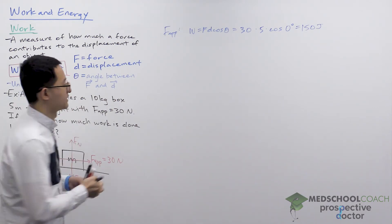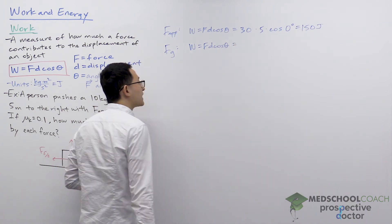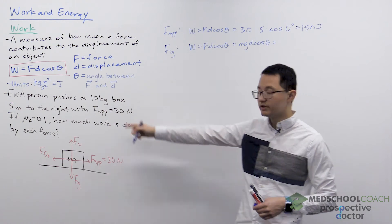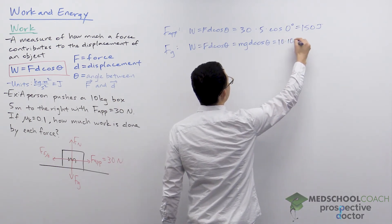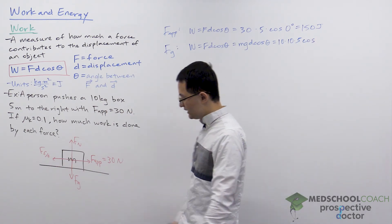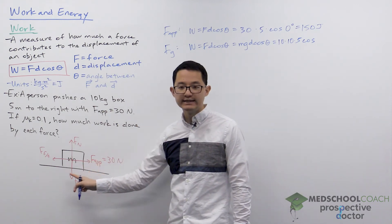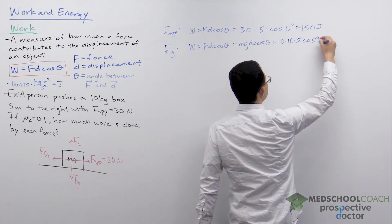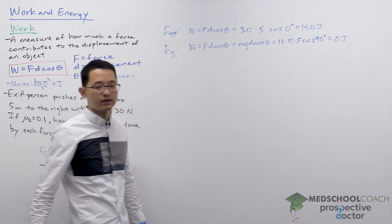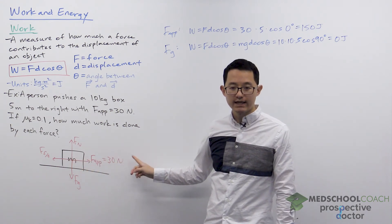Next, let's consider the force of gravity. Using the same equation, the force is the weight of the box, M times G. So we have M times G times D times cosine theta. The mass is 10 kilograms, gravity is 10 meters per second squared, and the box moved 5 meters to the right. The angle theta is between gravity — pointing straight down — and the displacement to the right, which gives a 90 degree angle. Cosine of 90 is zero, so the force of gravity does zero joules of work. Any force perpendicular to the direction of motion cannot do work.